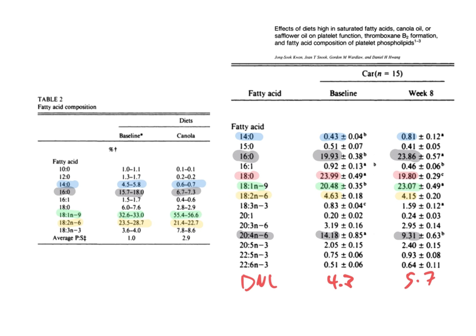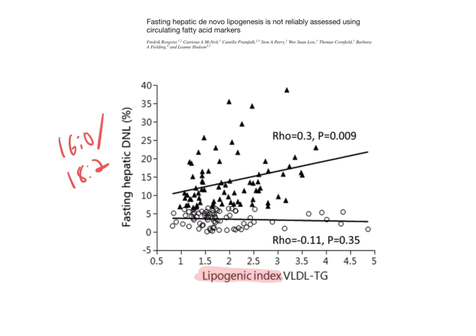This is the relationship between the DNL index and the amount of DNL that people are doing—isotopically proven to be a very reliable marker of DNL. So people in the canola oil group are clearly doing more DNL on account of being fed the canola oil.